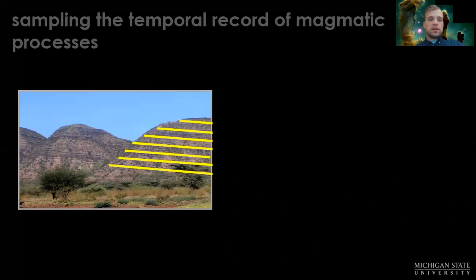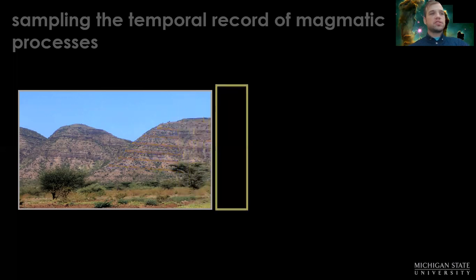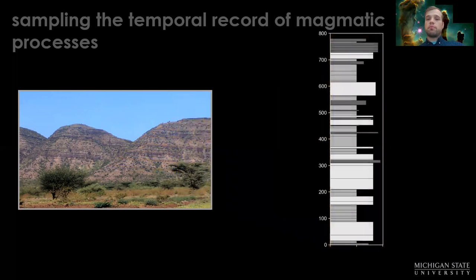This section here is from northern Kenya in the Turkana region. We walk up the side of the mountain and grab a sample of each lava along the way up. That allows us to construct a stratigraphic column where we can compare one lava to the other and see how the magmatic system is changing through time.